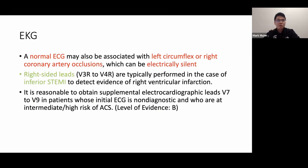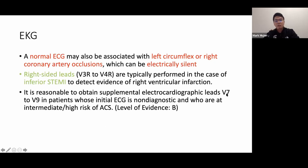Posterior MI associated with left circumflex or right coronary artery occlusion can be electrically silent. In inferior STEMI (leads II, III, AVF), obtain a right-sided lead to detect right ventricular infarction — around 40% of inferior STEMI patients have concomitant RV infarction. Request leads V7 to V9 in patients with non-diagnostic initial EKG and intermediate to high ACS risk. If a patient has chest pain, ACS-pattern troponin, and a non-diagnostic EKG, consider posterior MI and get leads V7 to V9.